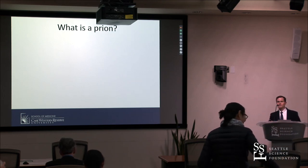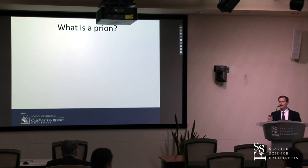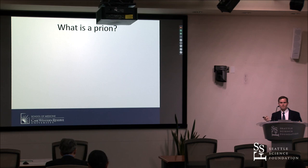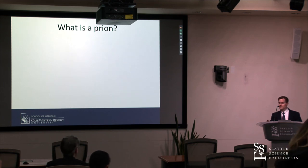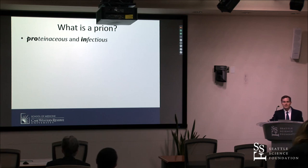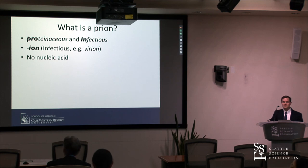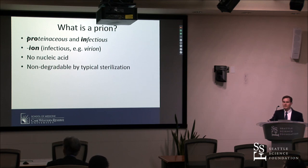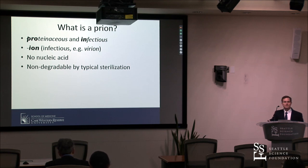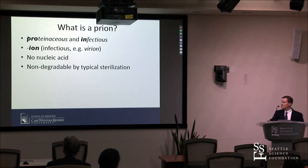Today we'll talk about what prion disease is, how to diagnose it, and how to manage it. A prion is the pathogenic protein that causes prion disease. It's named because it's proteinaceous and infectious. There is actually no DNA or RNA associated with the disease process — it's basically a transmissible protein. It forms very tight amyloids, which make it very difficult to sterilize using typical procedures.